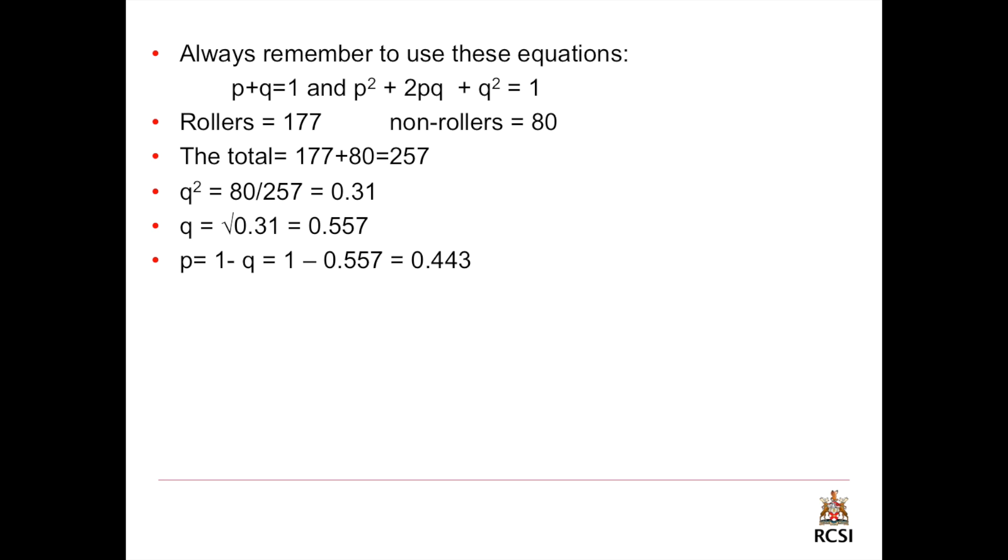And as we know that p plus q equal 1, so p will equal 1 minus q, which will equal 1 minus 0.557, and this will give us 0.443.